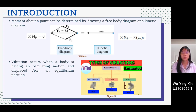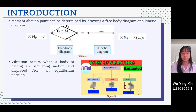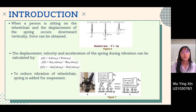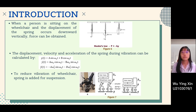Vibration occurs when a body has oscillating motion and is displaced from an equilibrium position. According to figure 5, there are two types of vibrations: free vibration and forced vibration, and both include damped and undamped vibration. Undamped vibration will be focused on in our case study. When a person is sitting on a wheelchair and the spring is displaced downward vertically, the force can be obtained using f equals ky, as shown in figure 6.